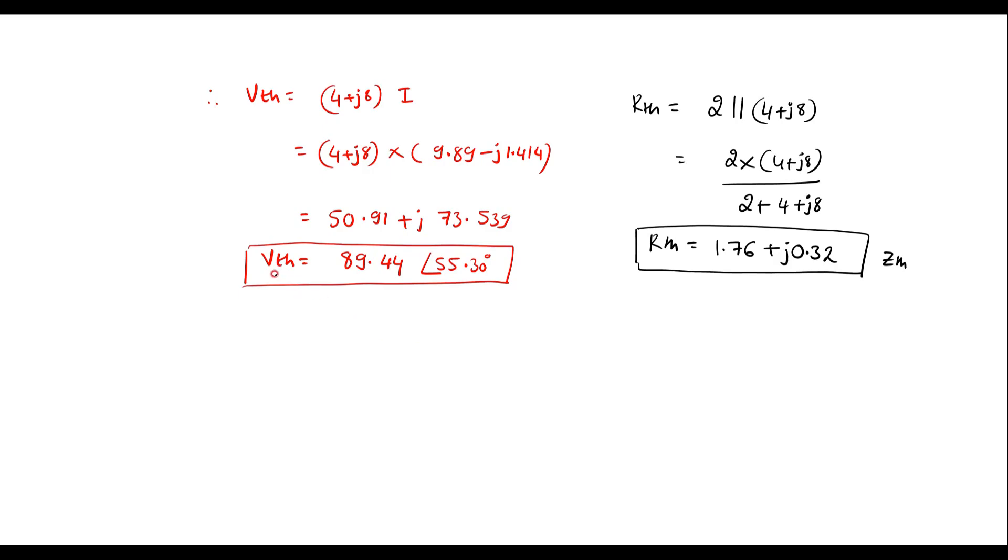So now let me draw the Thevenin equivalent circuit. That is Vth should be connected in series with Rth. We have this is Vth. The value of this is 89.44 at an angle of 55.3. We have Rth, this is Rth which is equal to 1.76 plus J0.32. So here we're supposed to connect ZL. So we know that the maximum power will be transferred to the load resistance if ZL value is complex conjugate of Rth. So therefore ZL will be equal to 1.76 minus J0.32. This is the value of ZL. For this value the maximum power will be transferred.